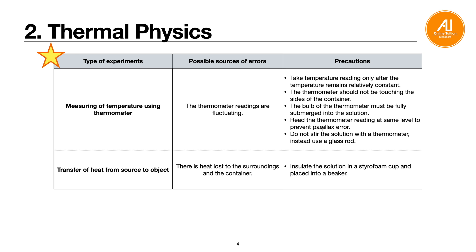Also, read the thermometer at the same eye level to prevent parallax error. Do not stir the solution with the thermometer — use a glass rod instead, because friction from stirring may cause the thermometer to measure a higher temperature than expected. When transferring an object from the heat source, there may be heat loss to the surroundings or to the container, so insulate the solution in a Styrofoam cup placed inside a beaker.